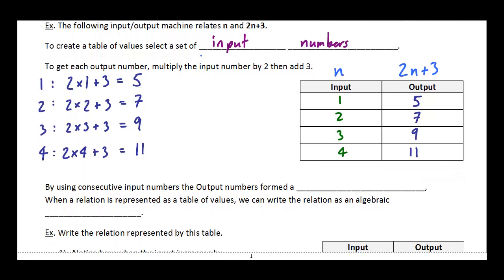By using consecutive input numbers, the output numbers formed a pattern. We can see that a pattern sort of emerges here. And because we've got a table of values, then we can write that relationship as an algebraic expression.